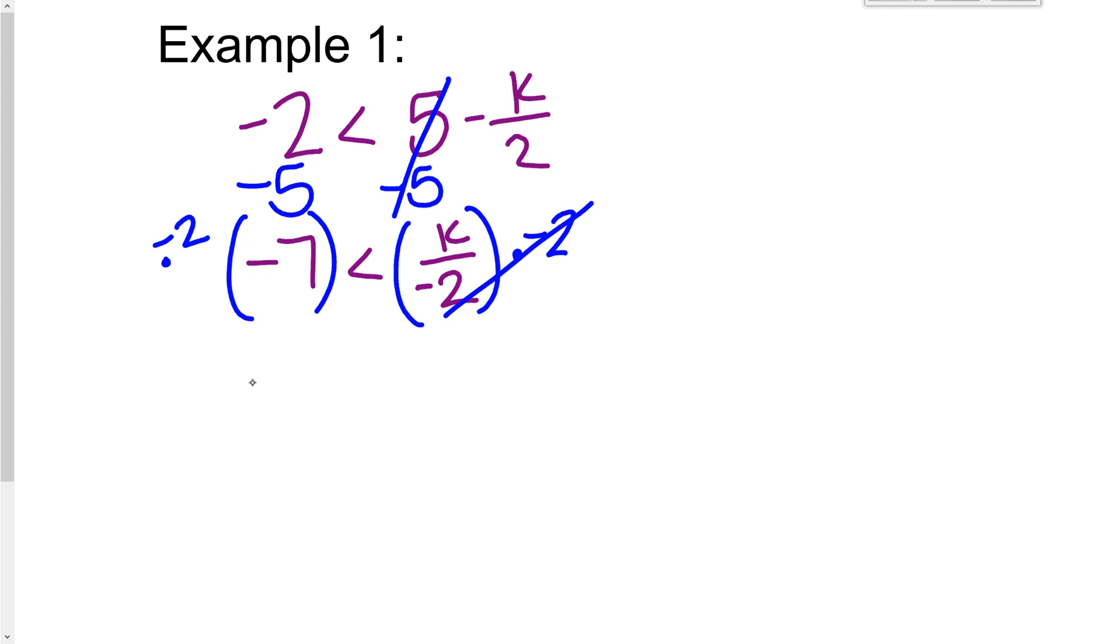Negative two times negative seven is a positive 14. I just have k left on this side. And then remember, because I multiply by a negative, I flip the sign.